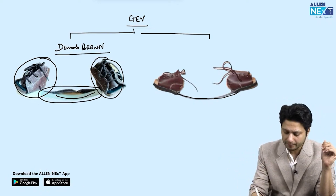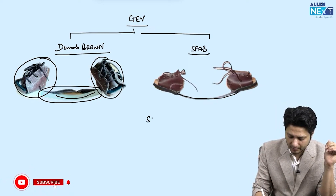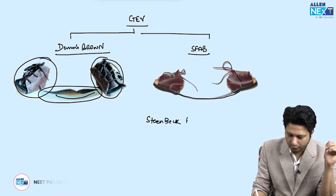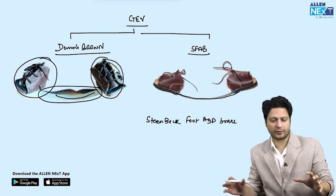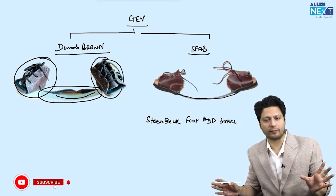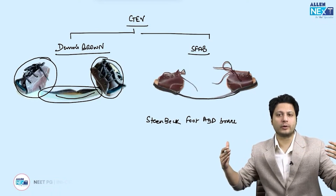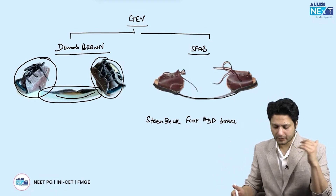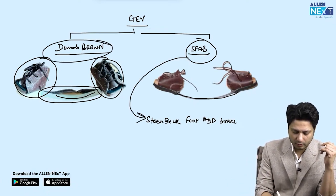The other CTEV splint is the SFAB — Steenbeek Foot Abduction Brace. It is also used in CTEV but has slight differences: instead of a bar there is a rod, and both feet are abducted almost up to 90 degrees — they are more abducted than in the Dennis Brown splint.